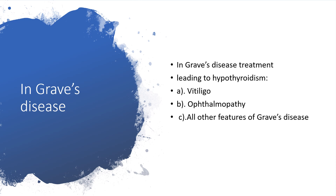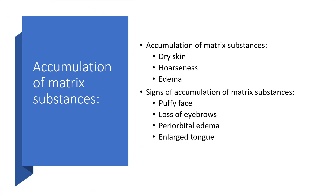In Graves' disease, treatment can lead to hypothyroidism. If you are dealing with Graves' disease in a hyperthyroid state and you give medications like thionamides to suppress it, there will be hypothyroidism. The clinical features of Graves' disease will be published in the next few days. You will also see vitiligo and ophthalmopathy.